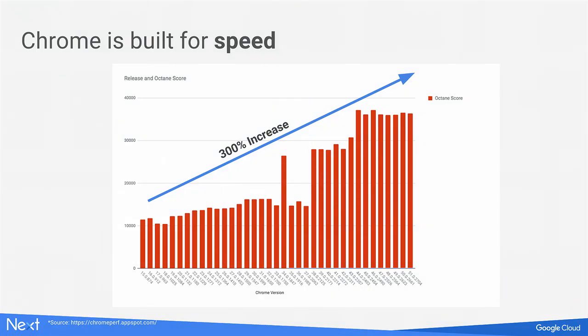Chrome was built to be fast in every way. We monitor every aspect of speed regarding startup time, page load time, video, rendering of graphics, complex scripts, JavaScript, and business web applications. We also work closely with our partners to maintain top performance with each software release. As you can see with the Octane scores — a benchmark of JavaScript speed — there have been significant improvements over the last couple of years.